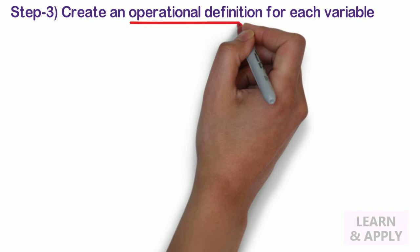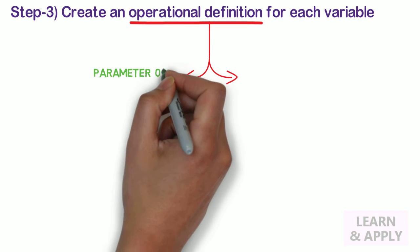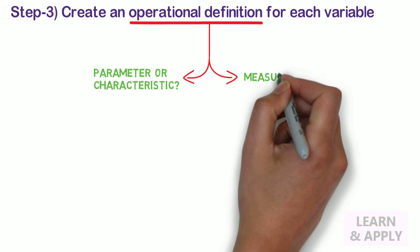Step 3: Create an operational definition for each variable. Let's understand first what is meant by operational definition. An operational definition is a description that establishes what a parameter or characteristic is and how to measure it.